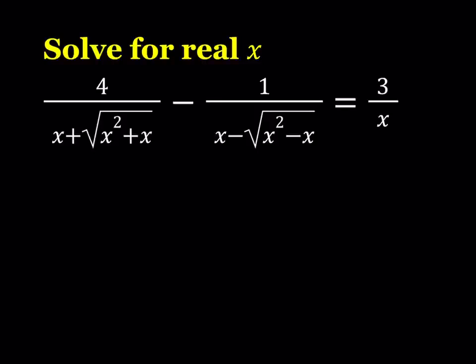So let's go ahead and do that. I'm going to multiply the first one by the conjugate of the denominator, and that is going to be x minus the square root of x squared plus x. And the bottom is going to be, from difference of two squares, x squared minus the quantity x squared plus x.